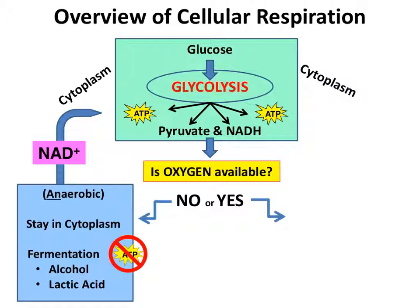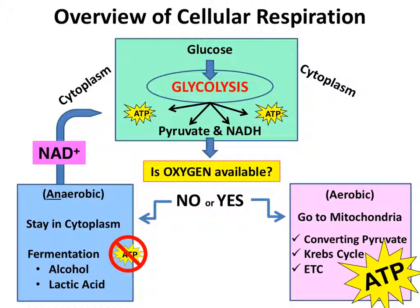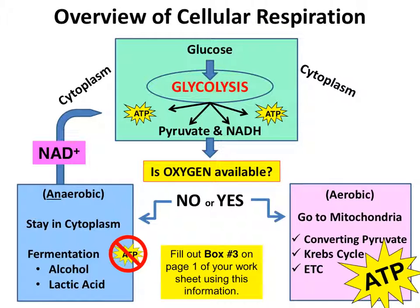If oxygen is available, then pyruvate and NADH head to the mitochondria to undergo aerobic respiration. This includes three steps: converting pyruvate, the Krebs cycle, and the electron transport chain (ETC). Remember, the ATP produced by glycolysis doesn't travel to the mitochondria — it's already good to go, and the cell can use it wherever it needs that usable energy. When aerobic respiration in the mitochondria is complete, pyruvate and NADH from glycolysis will be used to make a whole bunch of ATP in the mitochondria. Fill out box number three on the front of your worksheet.